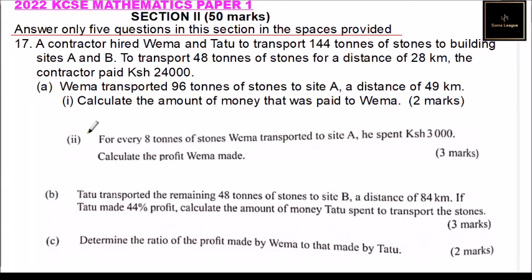This is Section B, which is 50 marks. You are supposed to answer five questions, but we are going to answer all of them for the sake of practice. This is the 2022 KCSE Mathematics Paper 1.